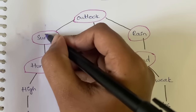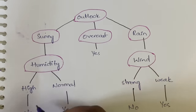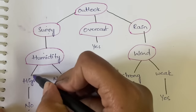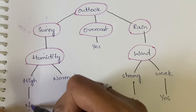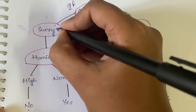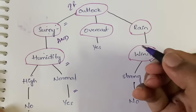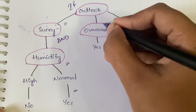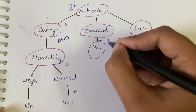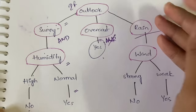For example, the rules you can extract are: if outlook is equal to sunny AND humidity is equal to high, then play is equal to no. If outlook is equal to sunny AND humidity is equal to normal, then play is equal to yes. If outlook is equal to overcast, then play is equal to yes — since there is only one condition here, 'and' is not required.